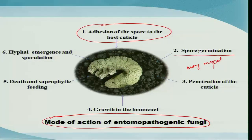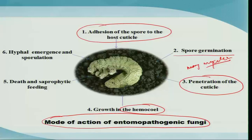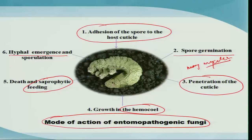The mycelia penetrate the cuticular structure of the insect and enter the hemocoel and hemolymph, where they produce certain toxins that kill the cells. This ultimately kills the whole insect. After the death of the insect, mycelial growth continues saprophytically. The hyphal bodies produce structures that emerge outside, and after completing the vegetative phase, the fungus enters the reproductive phase where it sporulates, producing millions of spores that are again dispersed by wind and water.